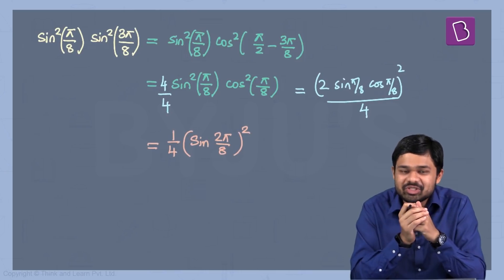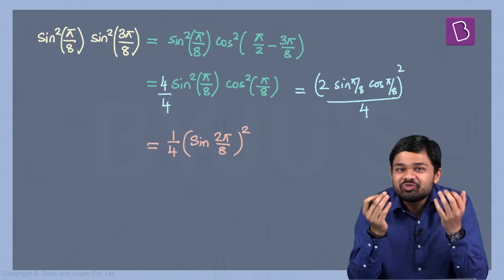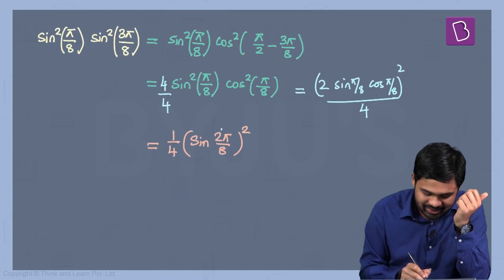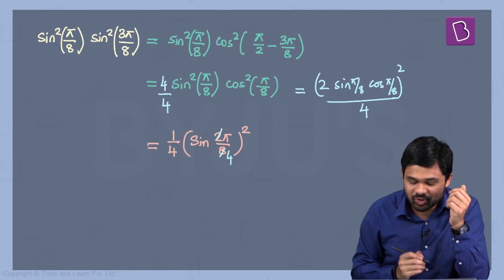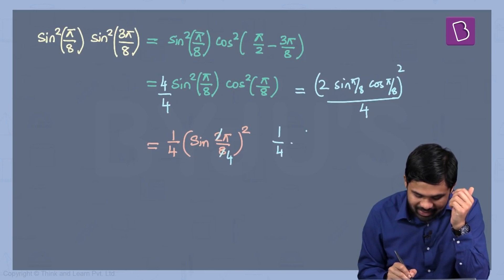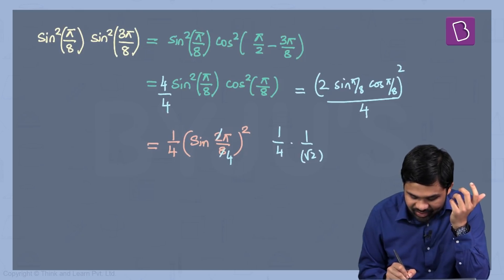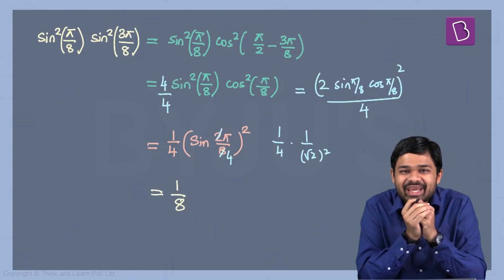Now I know the value of sin(2π/8). Sin(2π/8) is nothing but sin(π/4). Sin(π/4) is 1/√2, so you have 1/4 multiplying (1/√2)², which is nothing but 1/8, which is given in option C.